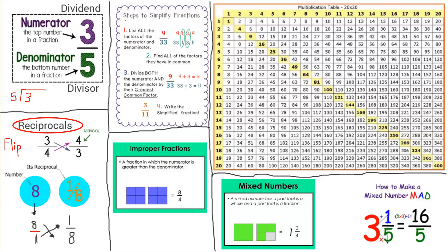Here are the steps to simplify fractions — look for the biggest number that can divide into both numbers. For example with 9: the factors are 1, 3, and 9. The biggest common factor is 3. When you divide 3 into 9 you get 3, and when you divide 3 into 33 you get 11, so your simplified fraction is 3/11.